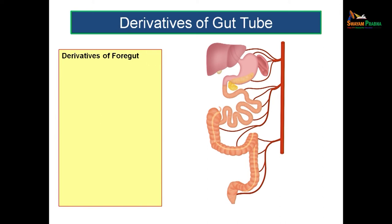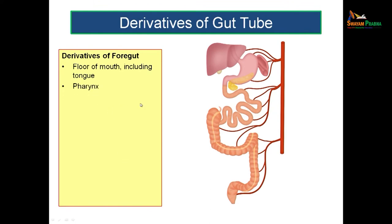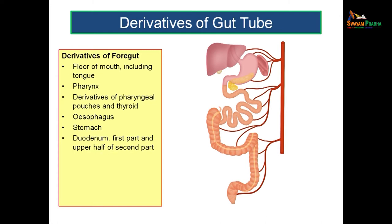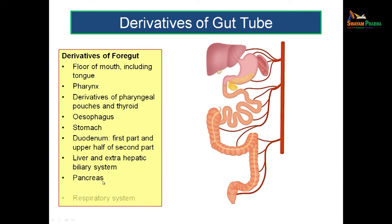Now let us see the derivatives of each part. The derivatives of the foregut: it starts with the floor of the mouth including the tongue, the pharynx, the derivatives of the pharyngeal pouches and the thyroid, then the esophagus, the stomach, then the duodenum — but only the upper half of the second part of the duodenum is derived from the foregut. The remaining part of the duodenum — the lower part of the second part as well as the third and fourth parts — is derived from the midgut. Then you have the liver and the extrahepatic biliary system, the pancreas, and the respiratory system. All these are derivatives of the foregut.